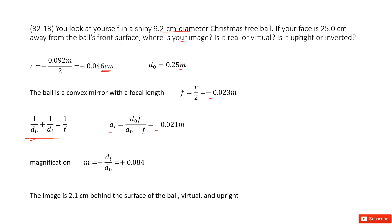Is it upright or inverted? This one, we need to look at the magnification. So for magnification, it's negative d i over d naught. So we input d i and d naught inside, we get a positive number. Because it's positive, this is upright.